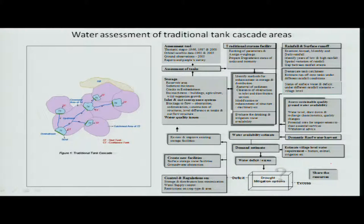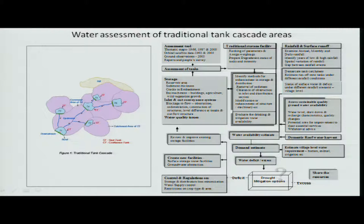In a cascade of tanks, one lake fills up, overflows, and the water comes to the next one on the downside. This is how overflow is shared between people. This is how we understand the storage condition, how much damage has happened, what can be done, and whether drought could be accommodated and shared through this storage system.